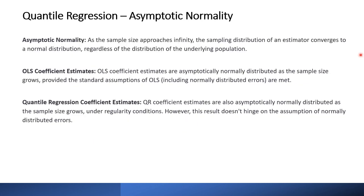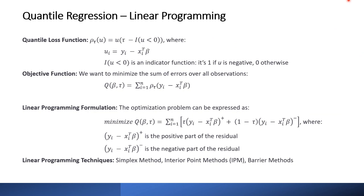Regarding asymptotic normality: as the sample size approaches infinity, the sampling distribution of an estimator converges to a normal distribution, regardless of the underlying population distribution. OLS coefficient estimates are asymptotically normally distributed as sample size grows, provided standard OLS assumptions including normally distributed errors are met. Quantile regression coefficient estimates are also asymptotically normally distributed as sample size grows under regular conditions; however, this result doesn't hinge on the assumption of normally distributed errors.